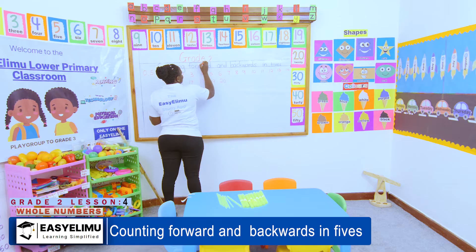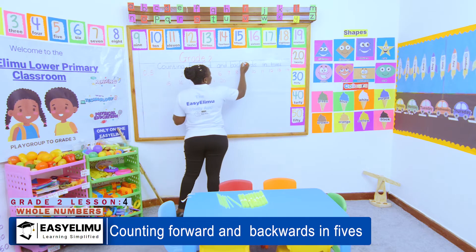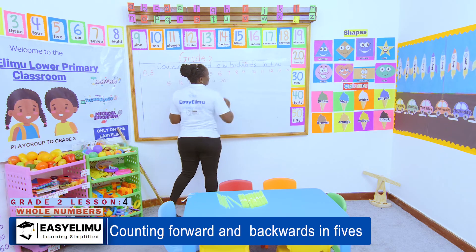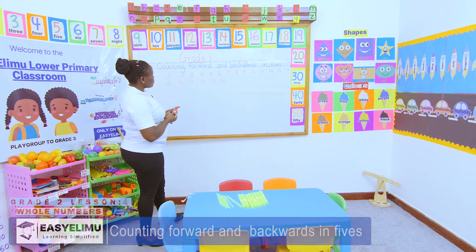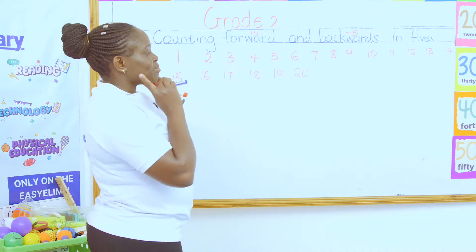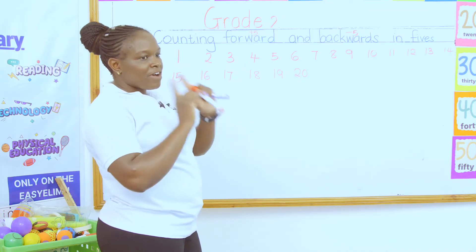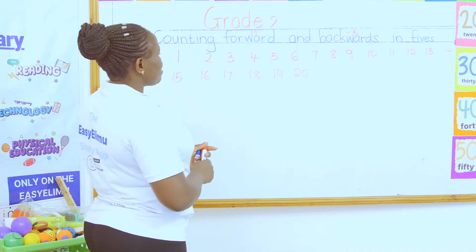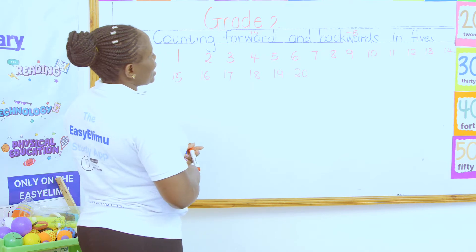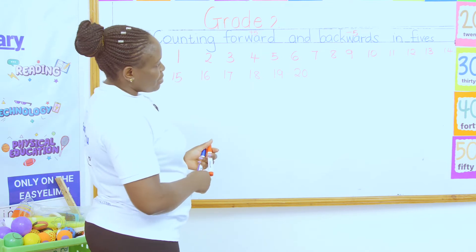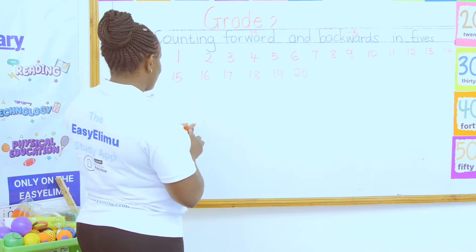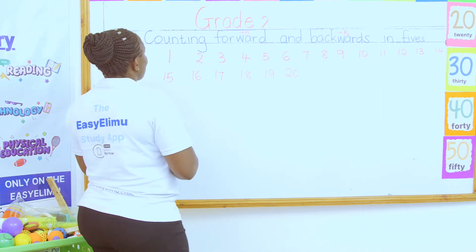What does counting forward in fives and backward mean? Forward means plus five. Backward means minus five. So if I'm counting forward, I am supposed to add five to every number I'm given. If I'm counting backwards, I'm supposed to reduce the numbers by five.